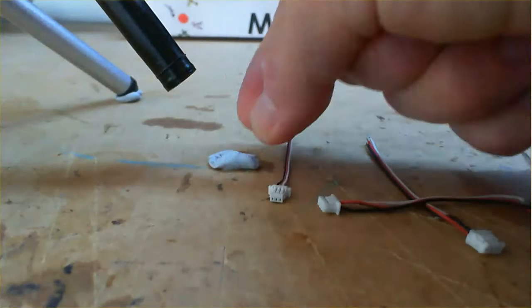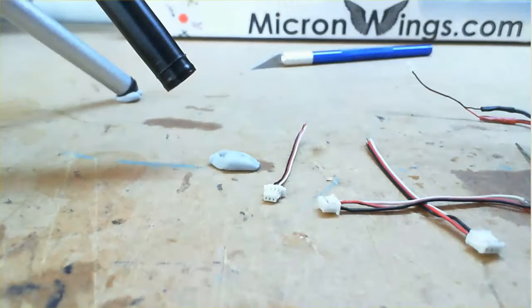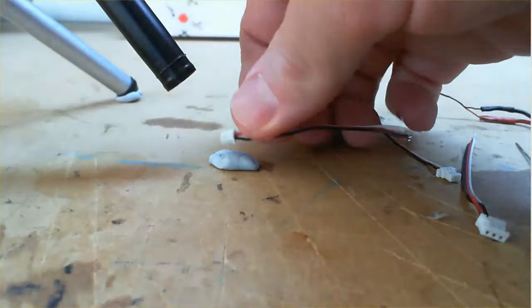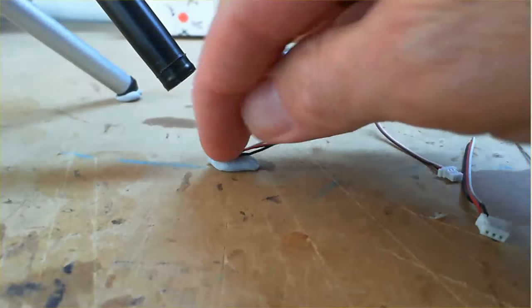So what I'm going to do is use some of this BluTek stuff. It's the sort of thing used to put posters on the wall. And I'm just going to use that to firmly hold the connector in place.